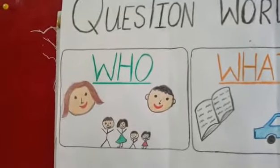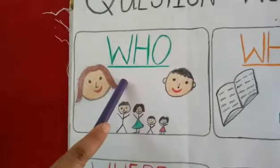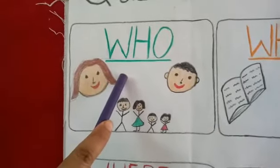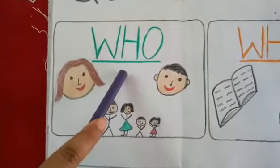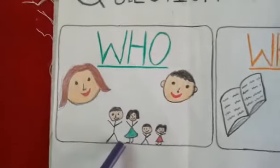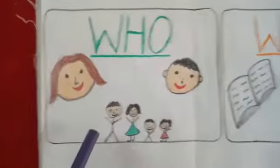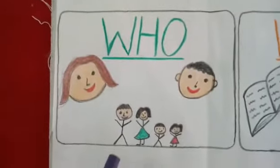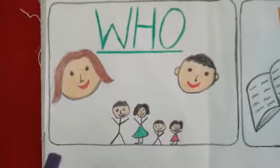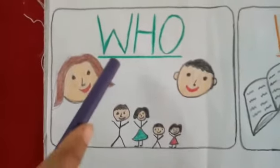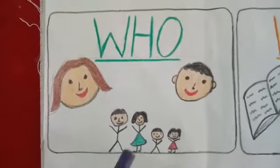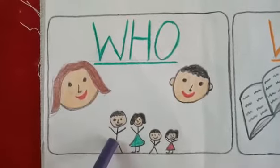So our first word is WHO. WHO is used when I want to know the person. Who always denotes a person. For example, if I ask question, WHO is calling? So answer will be Ramesh is calling or name of any person. So who always gives an answer to a person.